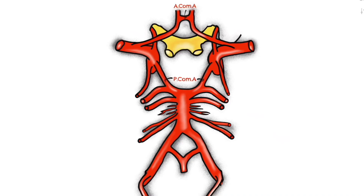One of the main clinical signs associated with cerebral aneurysms is cranial nerve palsies. This is because the vessels of the circle of Willis are in extreme proximity to the cranial nerves. Therefore, dilation of these arteries is very likely to cause a compression of a cranial nerve. A common example of this is seen in an aneurysm of the posterior communicating artery, which lies right next to the oculomotor nerve, the third cranial nerve.